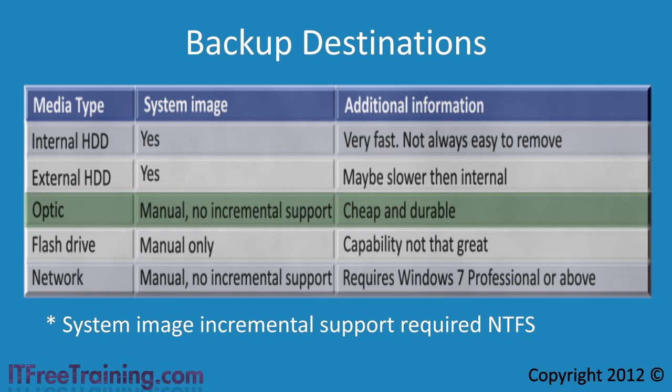The disadvantage of optical disks is that a system image cannot be included with a regular scheduled backup. When you configure Backup and Restore, you can configure a schedule for backup to include a system backup, but with optical media you need to run a system image separately. Additionally, optical media does not support incremental backups for system image backups. Incremental means that backups performed after the first full backup only save the changes. In order to support this feature, the destination media must be formatted as NTFS, which optical disks are not.